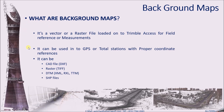The background map can be of two types — vector and raster. A vector file can be in the form of a CAD file, a DTM file, or a shape file. A raster file can be a GeoTIFF or a GeoJPEG file. These background files can be used either in GPS or in total station with proper coordinate references.